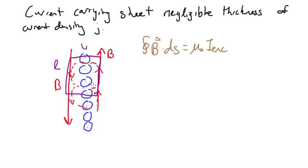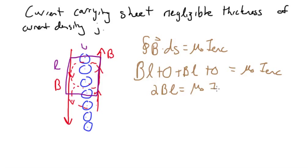We've chosen our Amperian loop such that the B field is constant so we can pull the B out. For this length it's going to be B times L, plus this part is zero here because the magnetic field is perpendicular, and that's going to be equal to mu naught I enclosed. We get 2BL equal to mu naught I enclosed.